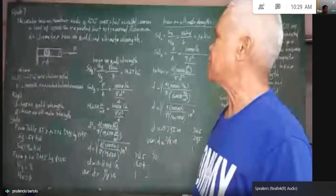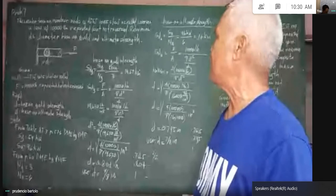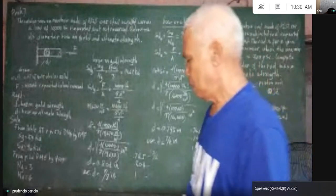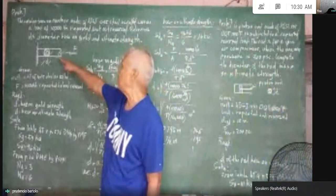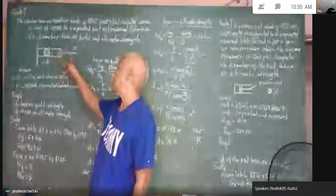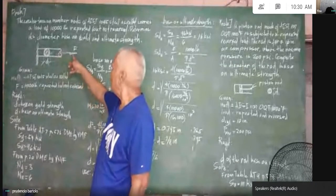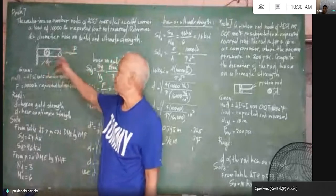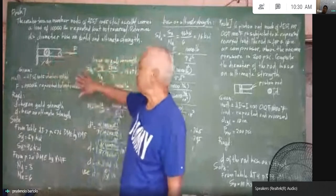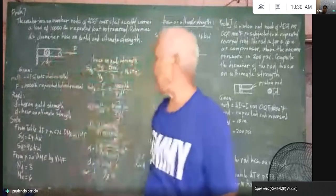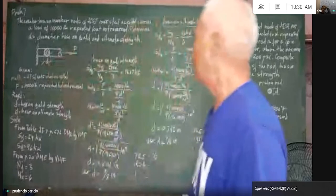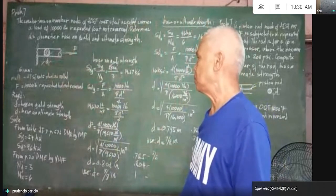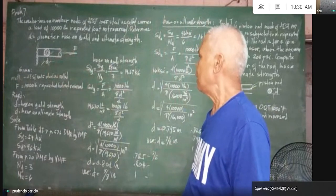We are asked to determine the diameter based on yield strength and ultimate strength. We have here a tension member which is subjected to a tension force. The force is 10,000 pounds, repeated but not reversed.